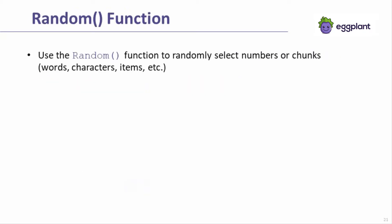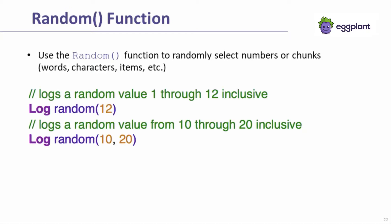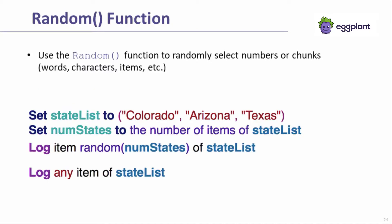The random function provides a simple way to randomly choose a number or chunk from a set of possible numbers, characters, list items, and more. With the random function, you can create dynamic data for test inputs or choose values from a list of acceptable values for use in a test. These first two examples show how to use the random function to choose from a range of possible numbers, either starting with 1 or starting with some other number such as 10. The random function can also be used to pick an item from a list, either by choosing a random item number or by using the any expression.